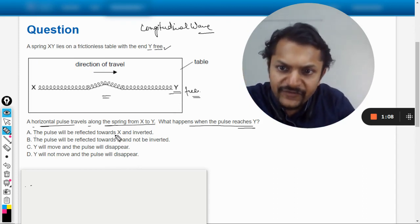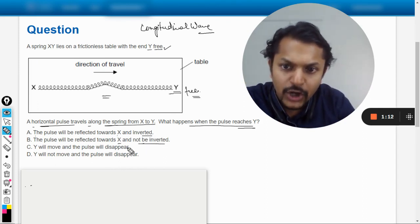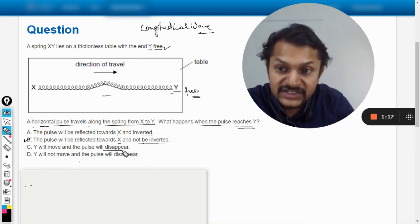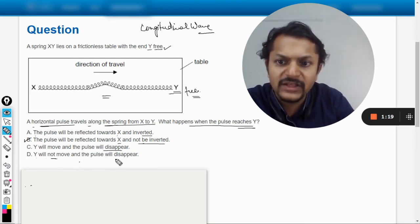Let us see: the pulse will be reflected towards X inverted? No, the pulse will be reflected towards X but will not be inverted. The answer B is correct. Y will move and the pulse will disappear? Y will not move and the pulse will disappear?